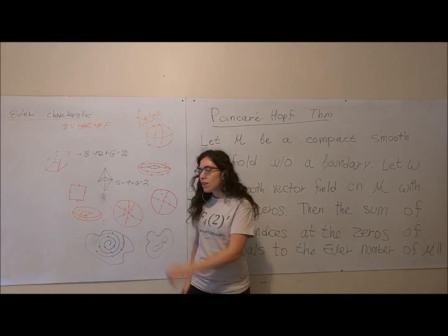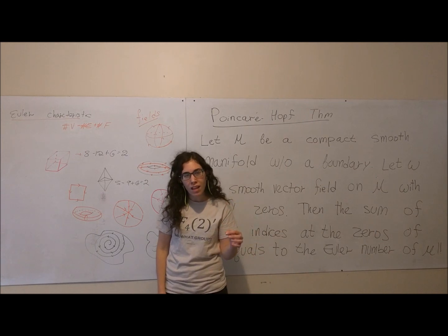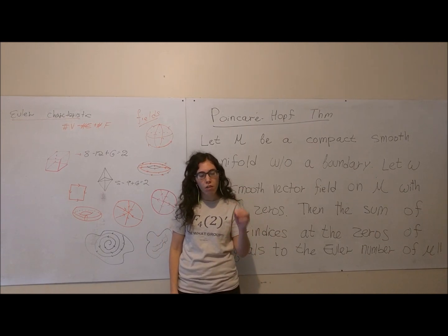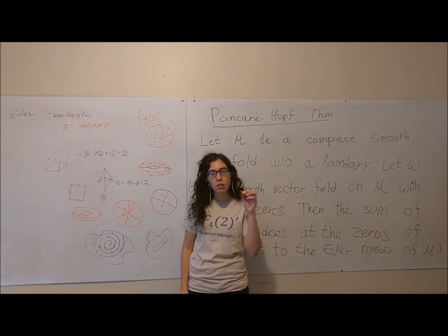The Euler characteristic is what we call a topological invariant. It's an idea from the very beginning of a subfield of mathematics called topology.